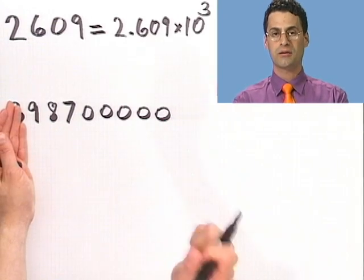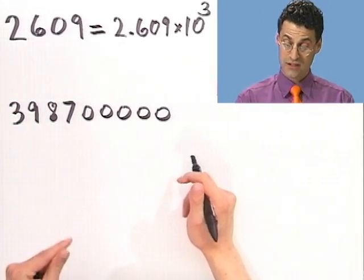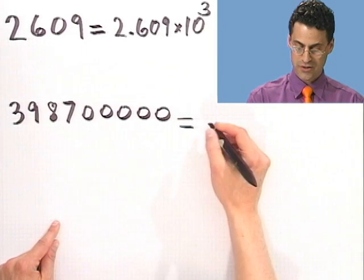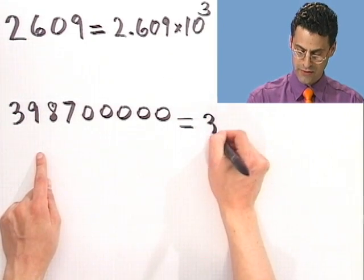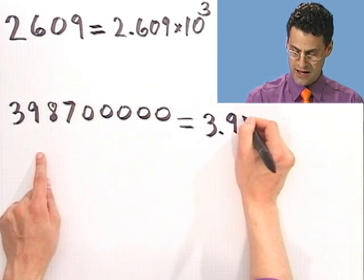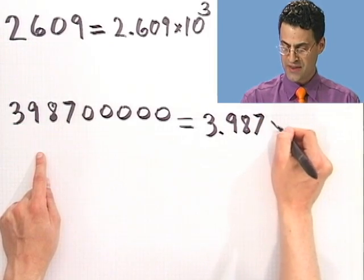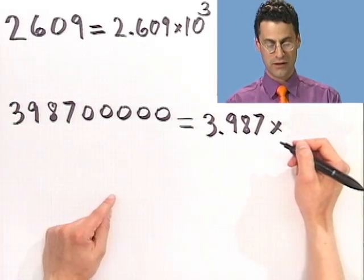If you were writing this out, you would get carpal tunnel syndrome or something. So there's an easier way of writing this, and that is to use scientific notation. You could just say the important part, 3.987, and then just tell me where to put the decimal point.